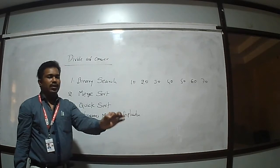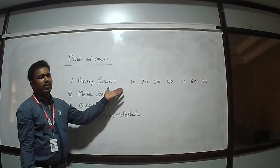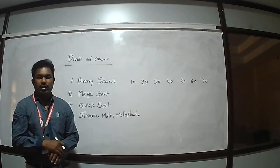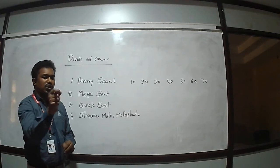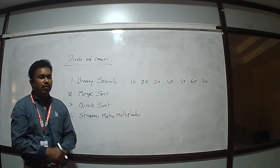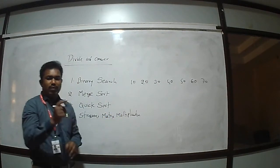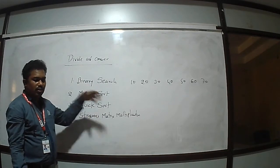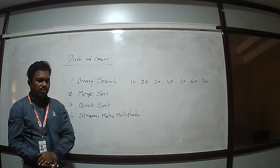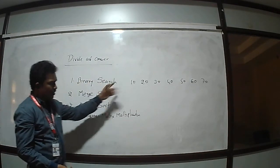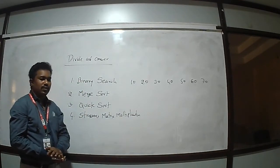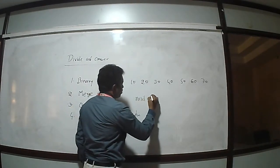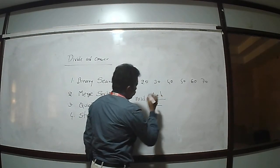The problem here is to search an element in a given list. With 7 elements it's easy, but with 1 lakh or 1 million elements it's not possible to search manually. That's why we use searching techniques. In binary search, the list is divided into 2 parts based on the middle element. The middle element is found using: position = (low + high) / 2.